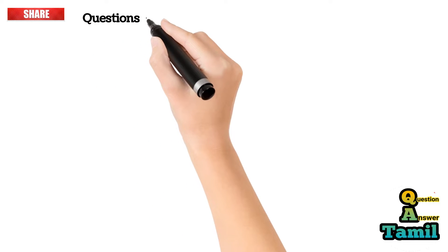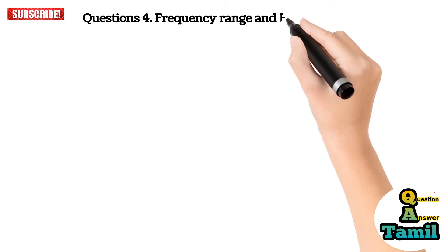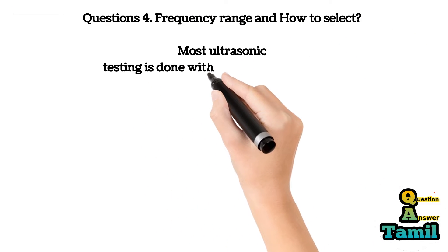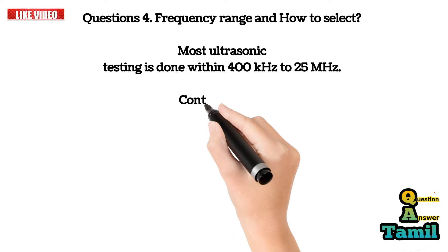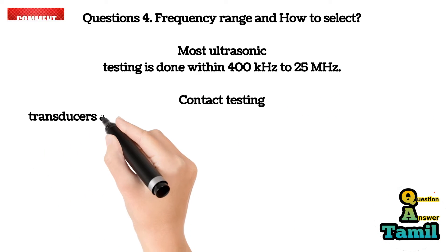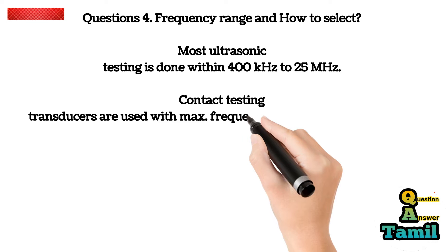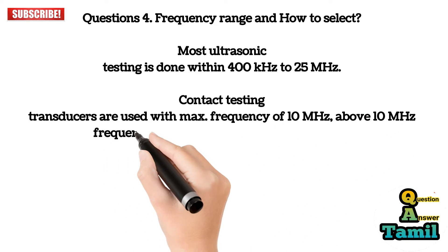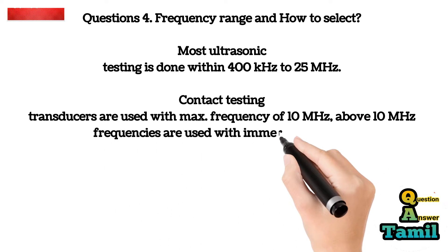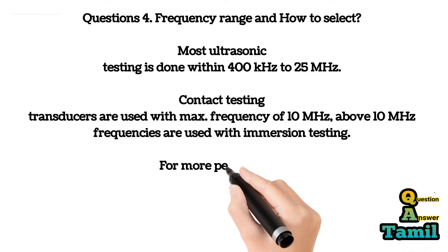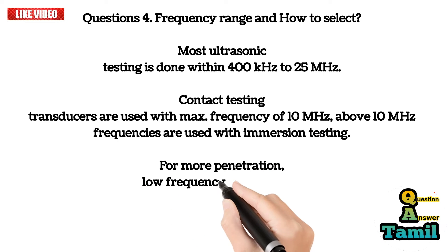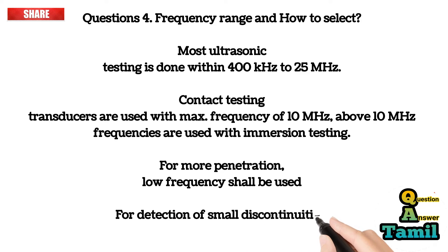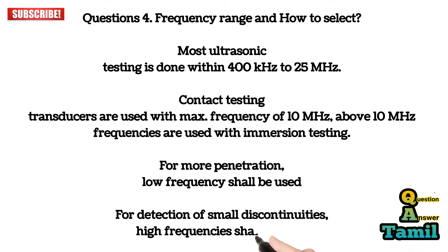Question 4: Frequency range and how to select. Most ultrasonic testing is done within 400 kHz to 25 MHz. Contact testing transducers are used with a maximum frequency of 10 MHz; above 10 MHz, frequencies are used with immersion testing. For more penetration, low frequency shall be used. For detection of small discontinuities, high frequencies shall be used.